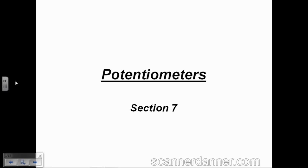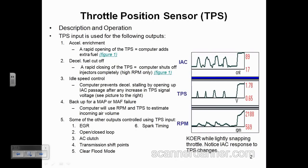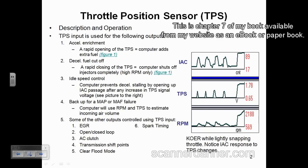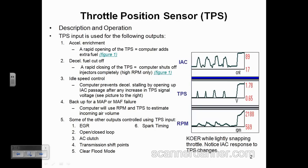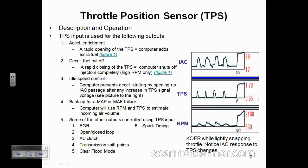Starting with potentiometers, section 7, page 2 — throttle position sensor is our main focus with this chapter. What we're going to do with the TPS is focus on it primarily, and then every other potentiometer will plug into the testing methods, just like we did with thermistors where we focused primarily on the ECT and then applied those tests to all other thermistors. We're going to do the same thing here.